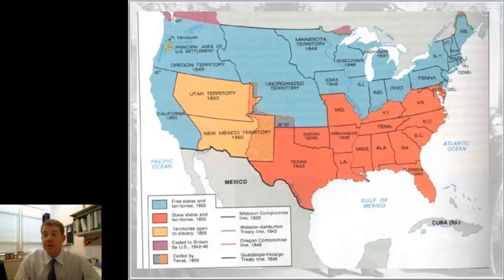I'm starting with this map right here because this is what the United States looked like in 1850. If you look at what we have here, we have the results of the Compromise of 1850.